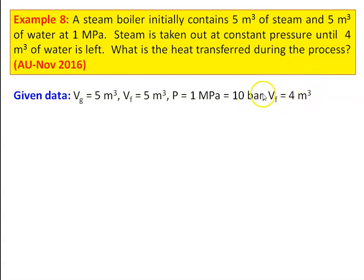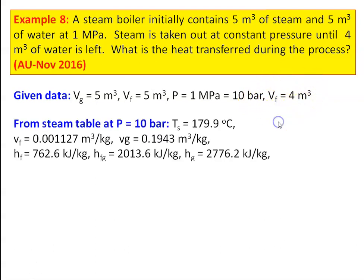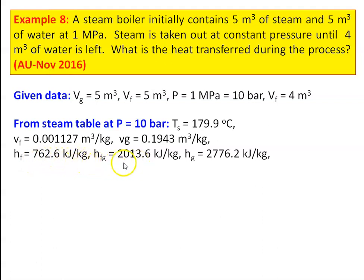Final volume of water Vf equal to 4 meter cube. From the steam table at pressure P equal to 10 bar: Ts equal to 179.9 degree Celsius, Vf equal to 0.001127 meter cube per kilogram, Vg equal to 0.1943 meter cube per kilogram, Hf equal to 762.6 kilojoules per kilogram, Hfg equal to 2013.6 kilojoules per kilogram, and Hg equal to 2776.2 kilojoules per kilogram.